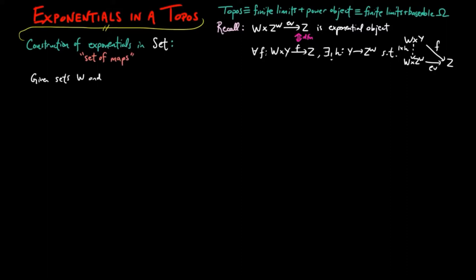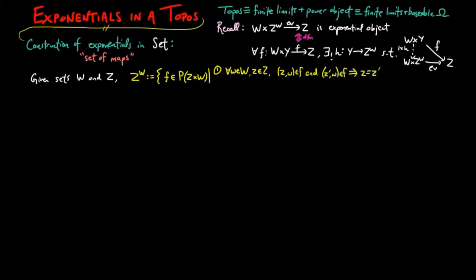We start by considering sets w and z. Operating in any axiom system for sets such as Zermelo-Fraenkel or Gödel-von Neumann-Bernays, the set of all set maps from w to z is the set of elements f in the power set of the product z cross w such that: (1) for each element w in W and z in Z, if z w is in f and z' w is in f then z equals z', and (2) for all elements w in W there exists an element z in Z such that z w is in f. It is conventional to write z = f(w) for the condition that z w is in f.